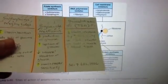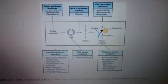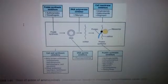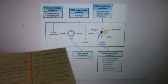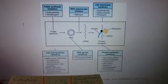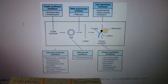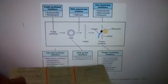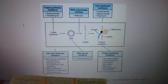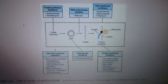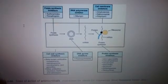You might remember ketoconazole as an antifungal drug. Then protein synthesis inhibitors: aminoglycosides, chloramphenicol, clindamycin, macrolides, mupirocin, streptogramins, and tetracyclines. You might think these are not bactericidal — well, these are allowing the body's immune system to take over. They are just holding back the bacteria so the body can take over. They are bacteriostatic.